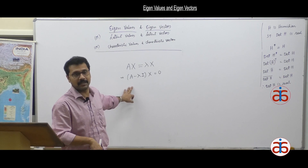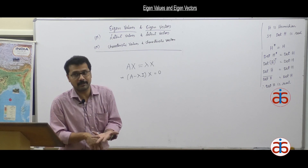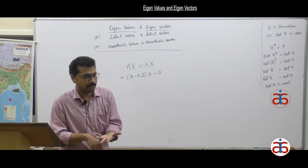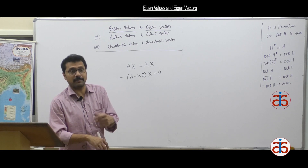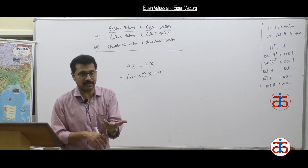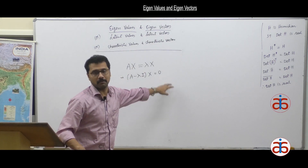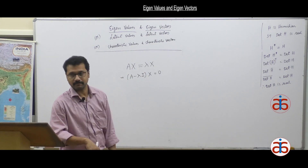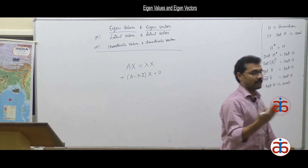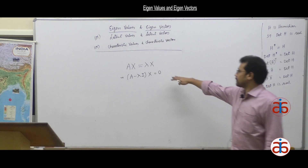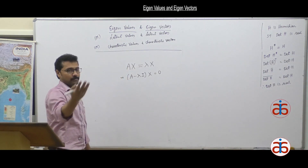A homogeneous system of linear equations is always consistent — it always has a trivial solution, which is x equals 0. So the question is: what are those non-trivial solutions X such that (A minus lambda I)x equals 0? Finding those non-trivial solutions is the eigenvalue problem.